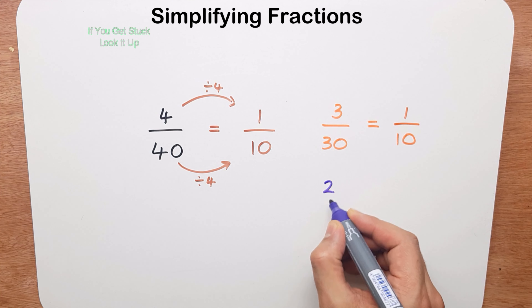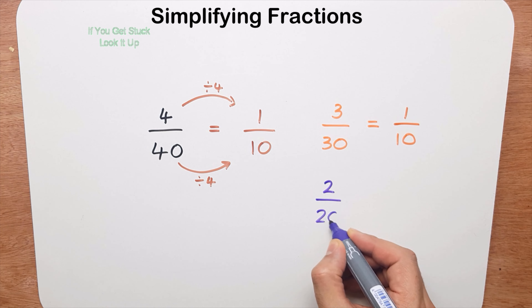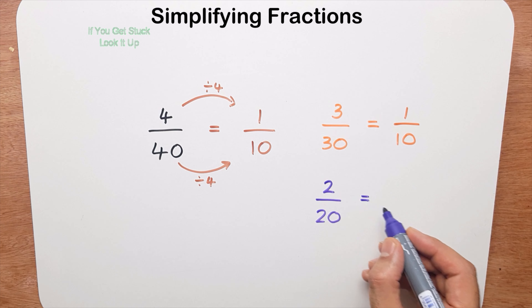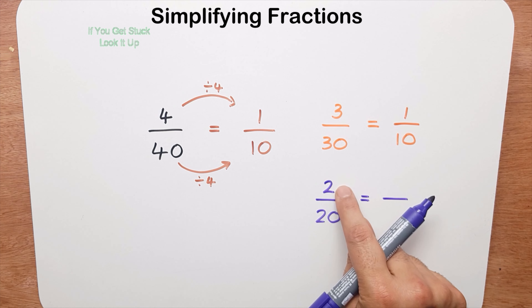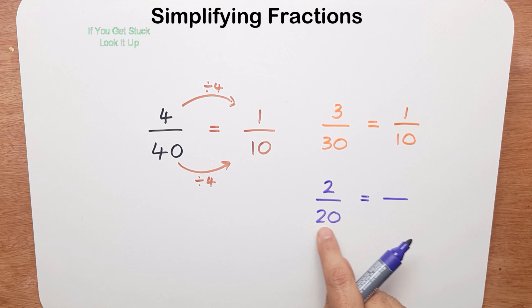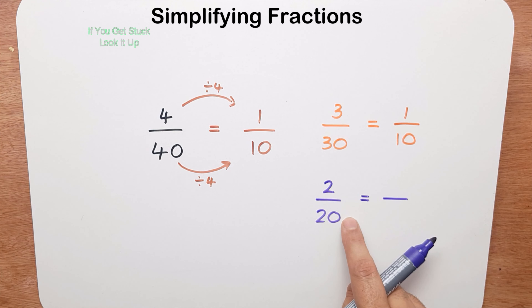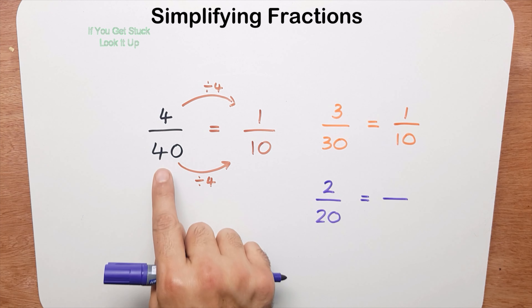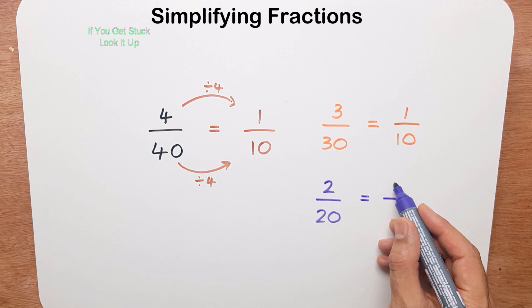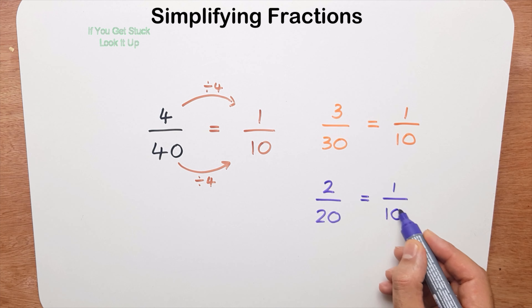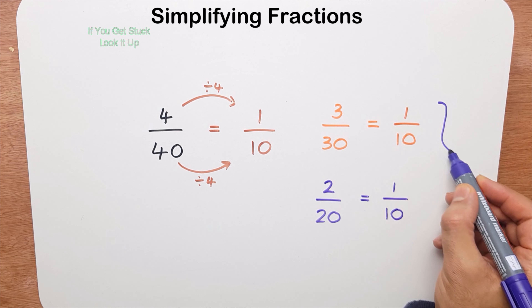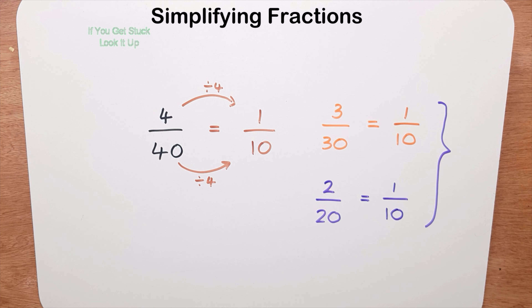What do you think this one is? 2 twentieths. That's a 2, and that's a 2 with a zero. So 2 and 20 — by looking at this pattern I know straight away it's going to be 1 tenth. Try to learn this pattern; it will make simplifying fractions much easier.